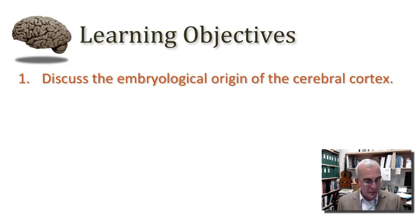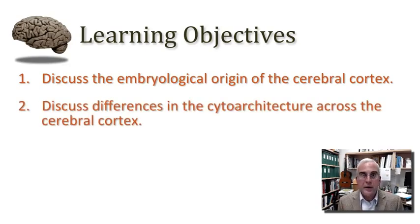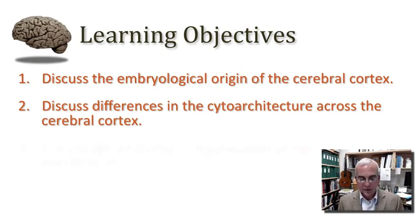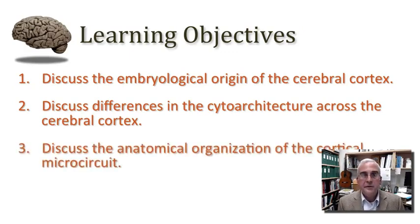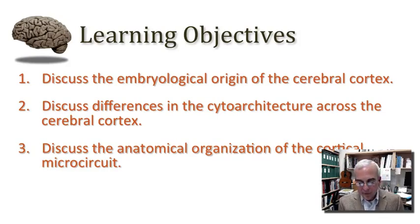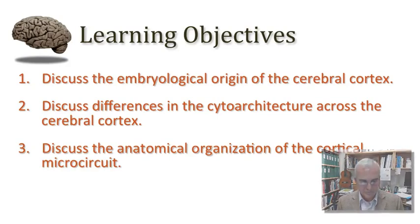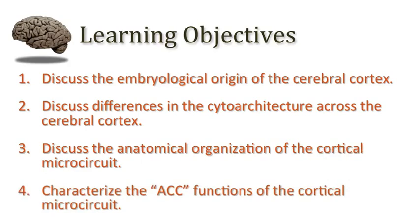I want you to be able to discuss the embryological origin of the cerebral cortex. I want you to be able to discuss differences in the cellular architecture found from one region of the cortex to another, as well as what's conserved — the anatomical organization of what we'll call the cortical microcircuit. And lastly, I want to give you an acronym that might help you remember some of the principal functions of that microcircuit, which I call the ACC of the cortical microcircuit.